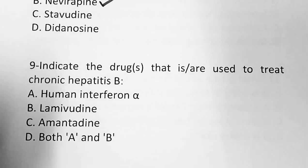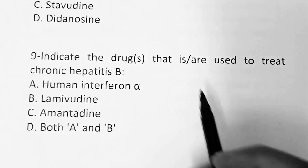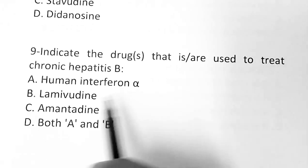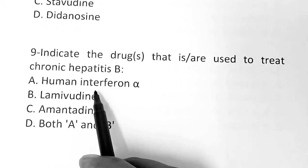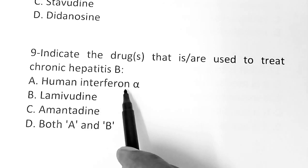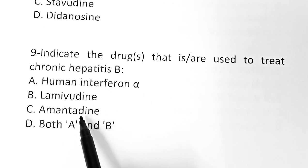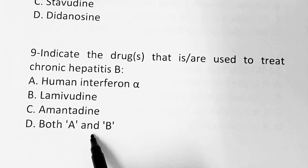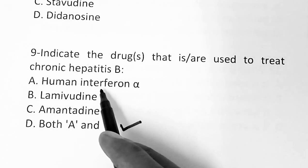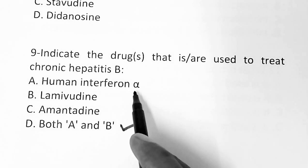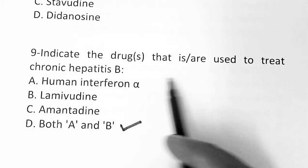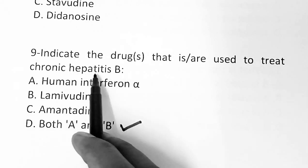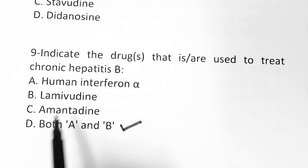Question 9: Indicate the drug that is used to treat chronic hepatitis B. Options are: human interferon alpha, lamivudine, amantadine, both A and B. The correct answer is both A and B — human interferon alpha and lamivudine are both useful to treat chronic hepatitis B.